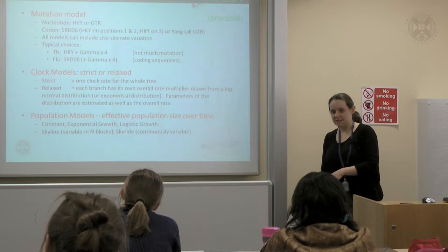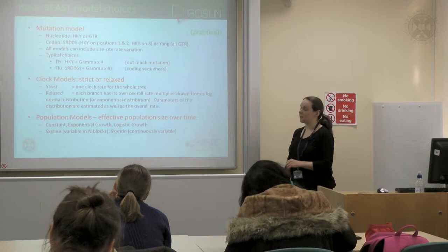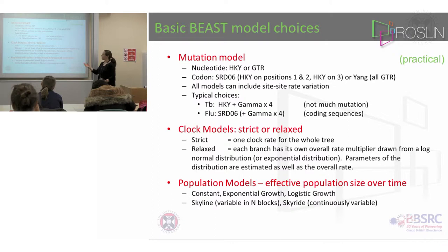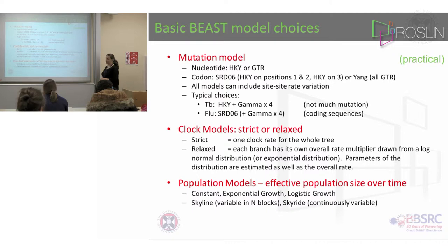Within BEAST, as I mentioned before, there are quite a lot of sub-models. The first of which you will have heard about this morning is the mutation model. It's the model which describes the A to G rate, the C to T rate. So when you set up a BEAST analysis, you need to set each of these three models. In the mutation model, you have various choices — you can choose between the HKY model or the GTR, the general time reversible model.